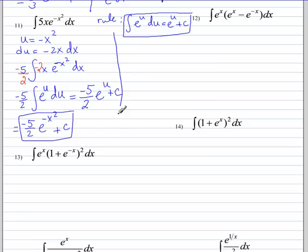By taking the derivative of our answer. So that would be negative 5 halves. Derivative of e to the u is e to the u times u prime. So this is e to the negative x squared times derivative of the exponent, which is negative 2x.